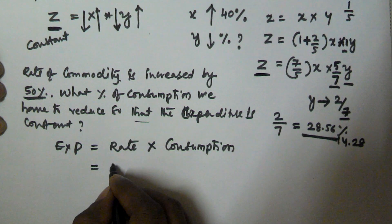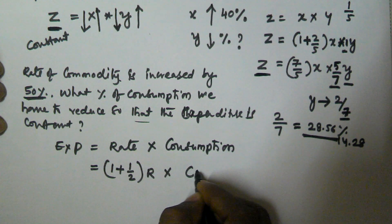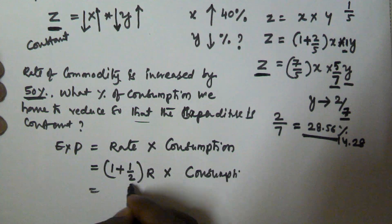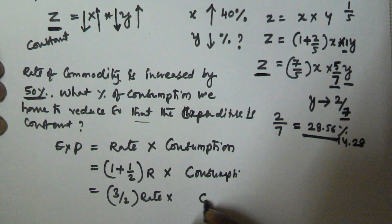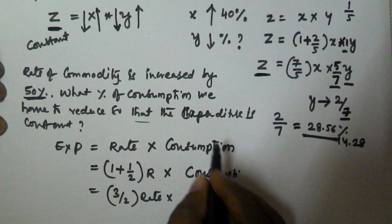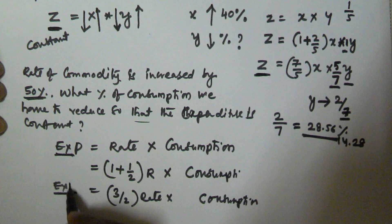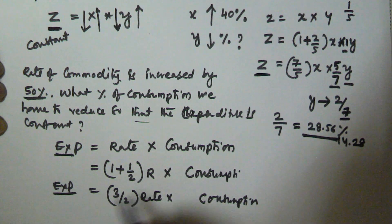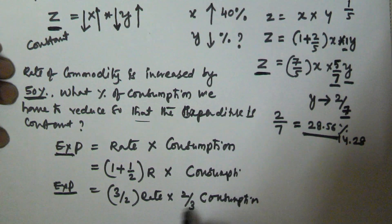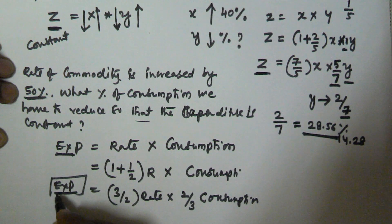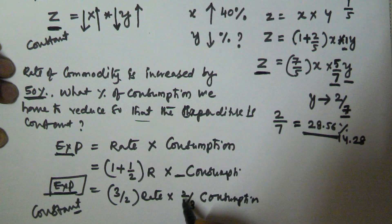The rate is increased by 50 percent, meaning new rate = (1 + 1/2) × rate = (3/2) × rate. So expenditure = (3/2) × rate × consumption. To keep the expenditure constant, we must multiply consumption by 2/3. Then 2 and 2 cancel, 3 and 3 cancel, and expenditure remains constant.